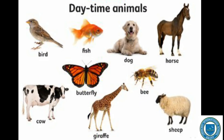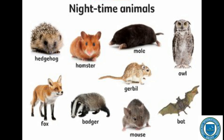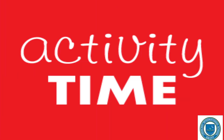Some animals are active during the day and spend the whole night resting or sleeping — they are called day animals. For example: dog, monkey, elephant, and so on. Some animals are not active during the day; they spend the whole day resting or sleeping and are active at night — they are called night animals. For example: bat, mouse, owl, and so on.